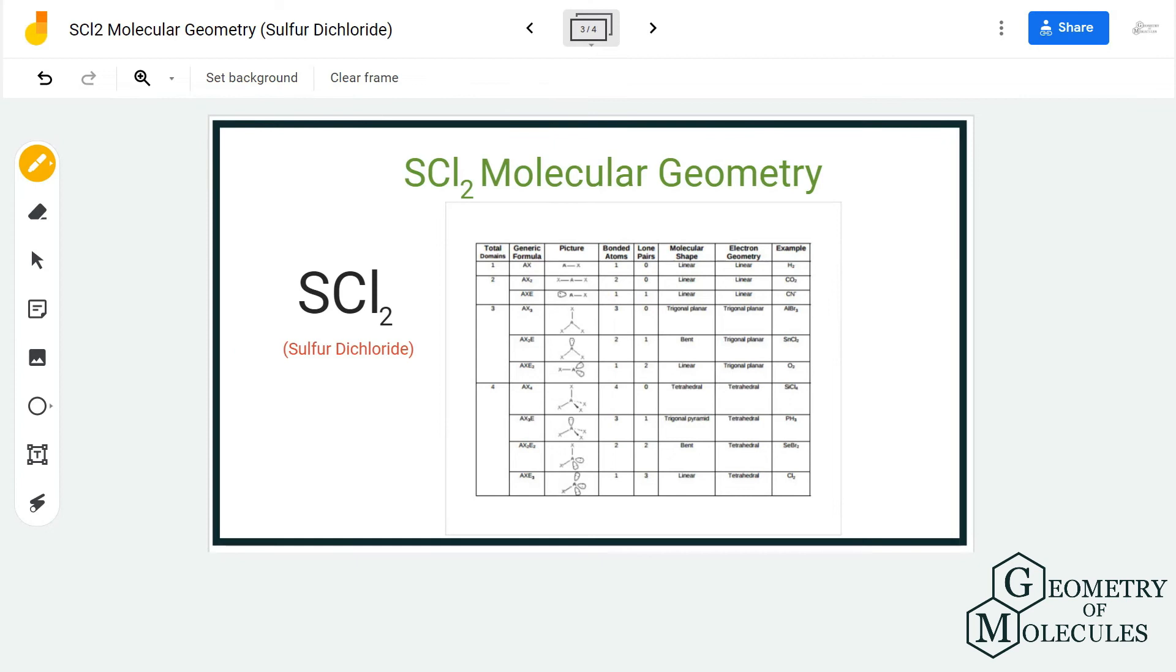If you look at the chart given here using AXN notation, you can see that it has a notation of AX2E2, where A is the central atom, X is the number of atoms binding to it, and E is the number of lone pairs on it. It has a bond angle of approximately 109.5 degrees, though it might not be exact for this molecule.